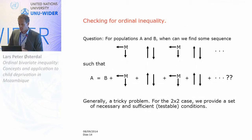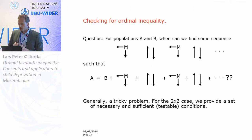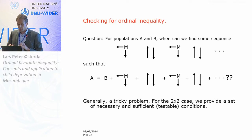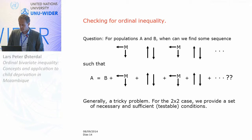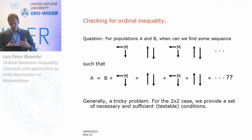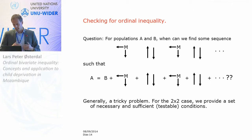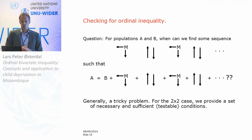Our general definition is: there is more inequality in population A than in population B if A can be obtained from B by making some sequence of these inequality-increasing operations. There is, however, a major challenge — if you have two empirical distributions A and B, how can you check if you can obtain one from the other by some sequence of these operations? That is generally a tricky mathematical problem. For this paper, we focus only on the canonical two-by-two case, which is nice because we can provide a set of necessary and sufficient conditions for more unequal — essentially testing a system of inequalities.